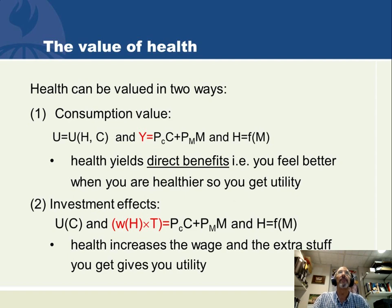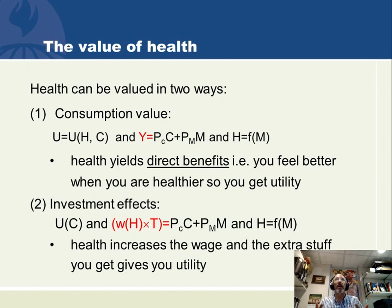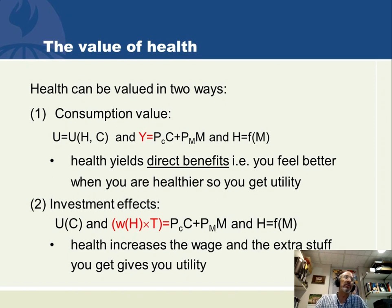There's another version in the original Grossman paper where he says we could get all of the same implications without assuming that people actually care about their body. This is a great model for artificial intelligence — if all you want is utils from consumption opportunities, you could do a Grossman model. What we need is that your body's health determines your productivity. Instead of Y being exogenous income, we generate income with a wage times hours spent earning: T is hours spent, and W depends upon how healthy you are. Health increases your wage and that gives you extra stuff, which gives you utility.